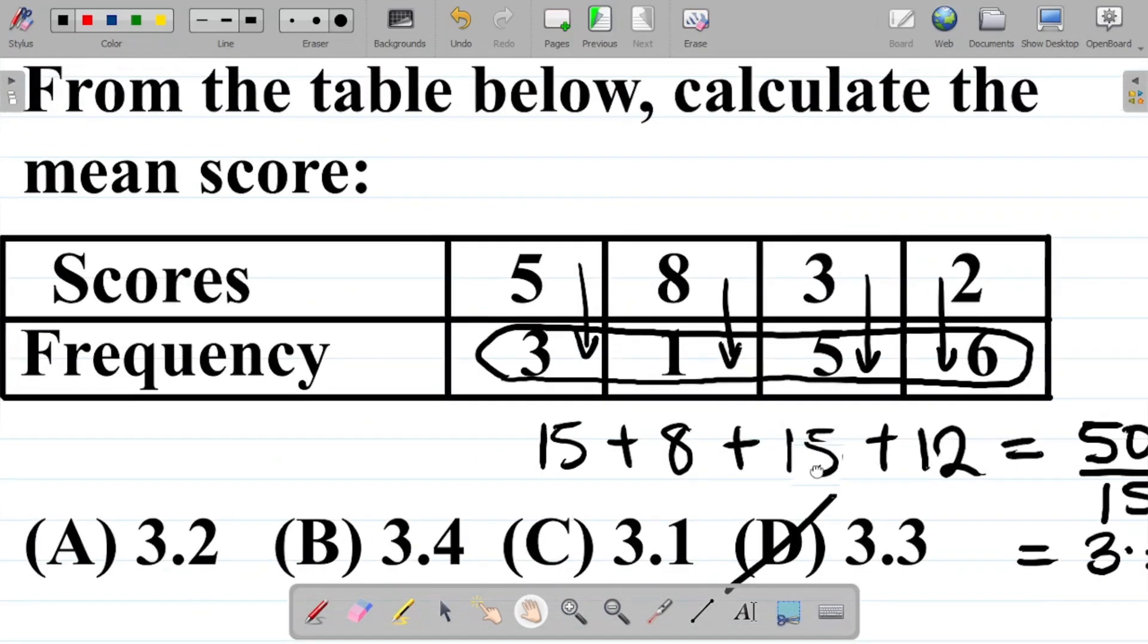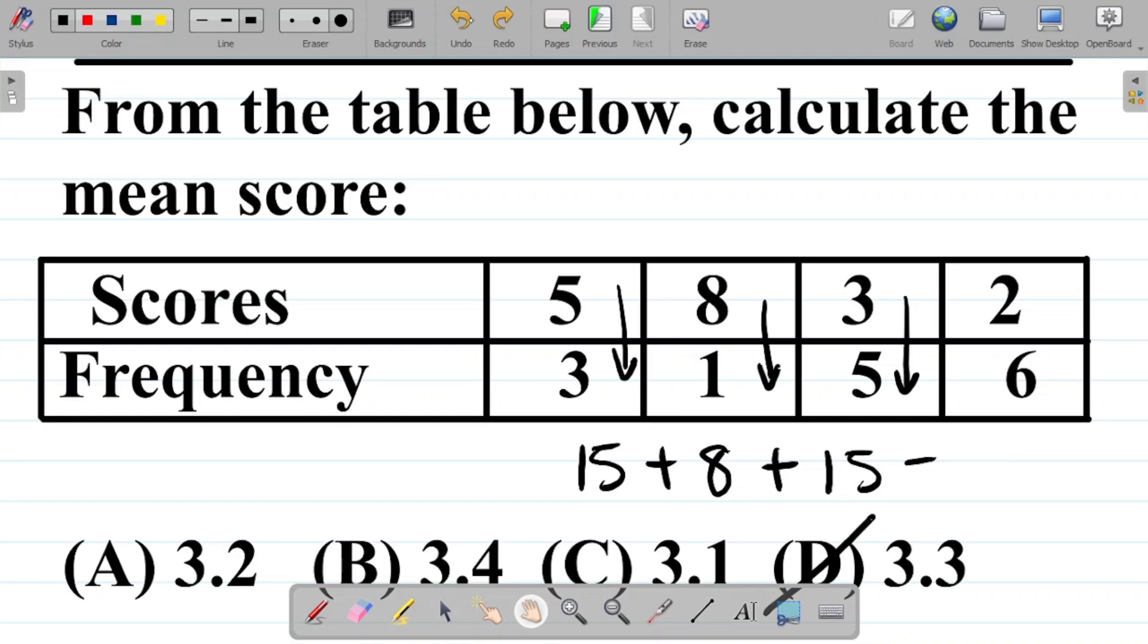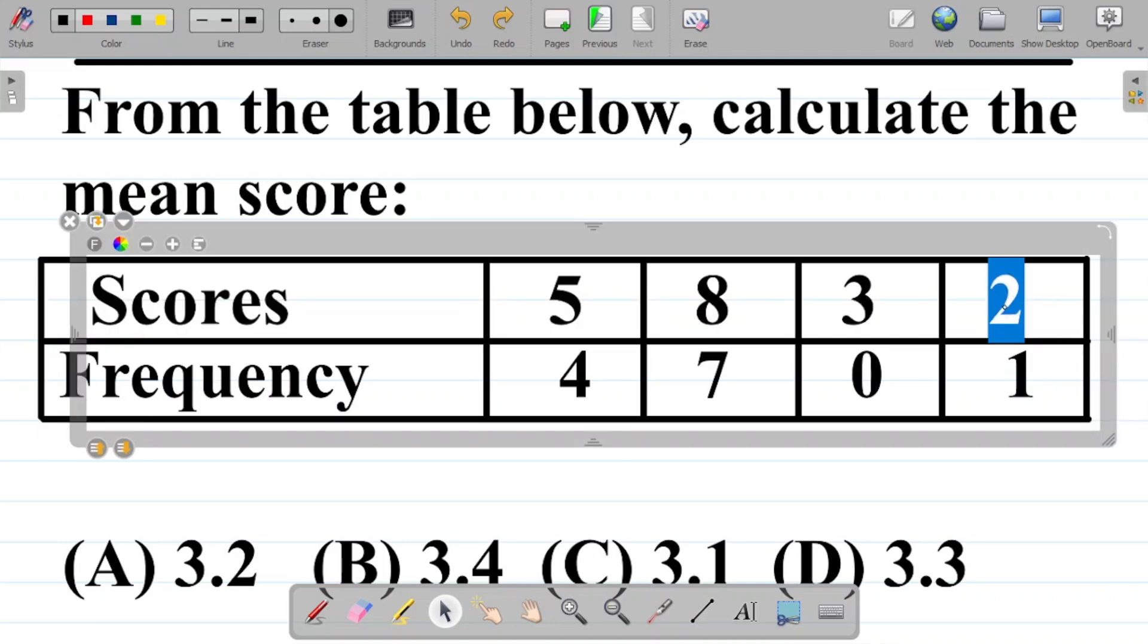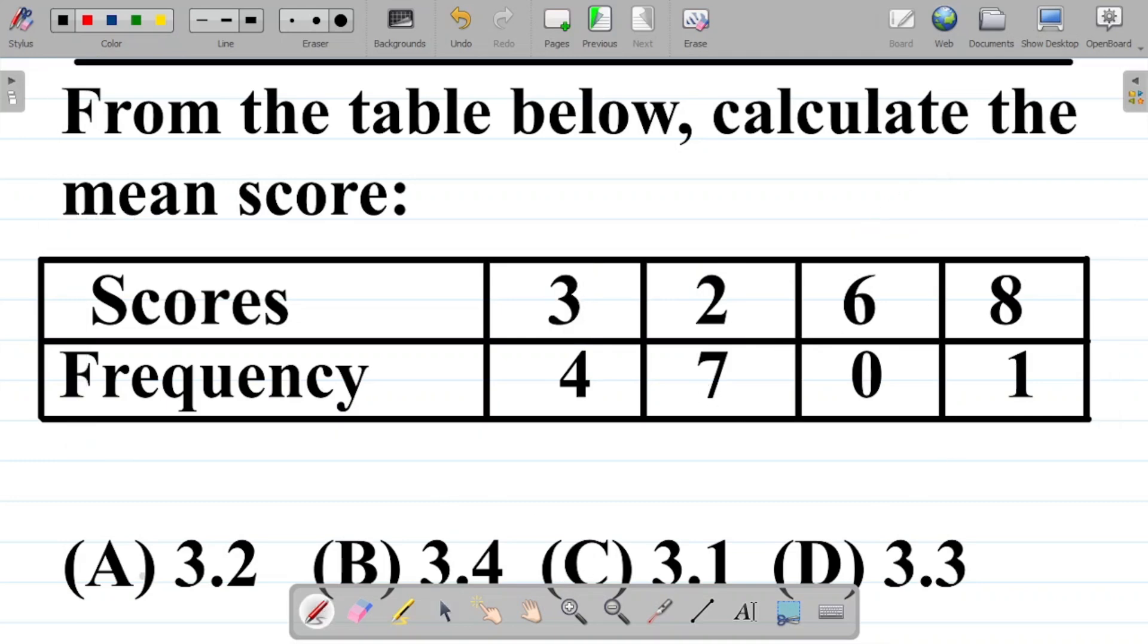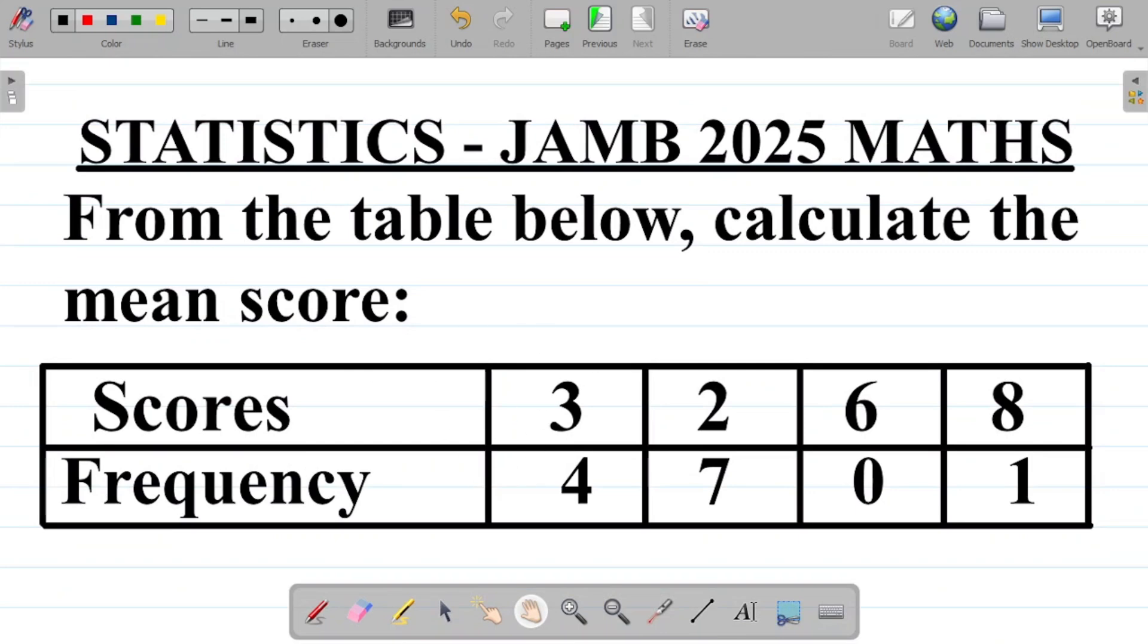Now let me give you a task to do. So I'm going to change these values, and then you solve it and tell me the answer in the comment section, and I will tell you if you're correct. Let's say what I had here was 4, 7, 0, and 1. Then coming back to scores, let's say this is 8, 6, 2, and 3. So for this question here, ignore these options. You solve this question yourself from this new table. Calculate the mean of this question. Leave your answer in the comment section, and I'll tell you if you're correct.